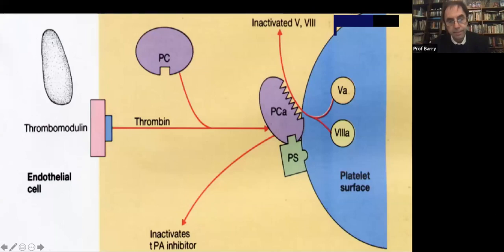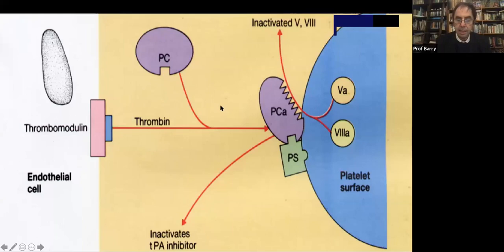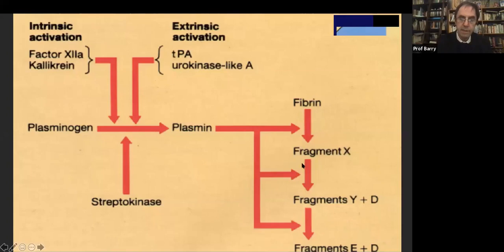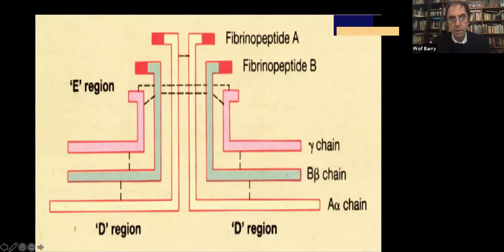The normal endothelium has a way of switching off activated thrombin: activated thrombin binds thrombomodulin, which switches on protein C and protein S, and that switches off activated clot. Now, moving on to D-dimers — when one has a clot, the body breaks down the clot via plasmin into various fragments. One of the fragments we can measure is the D-dimer, which is indicative of breakdown of activated clot. D-dimers show you that the patient has had some form of thrombus.